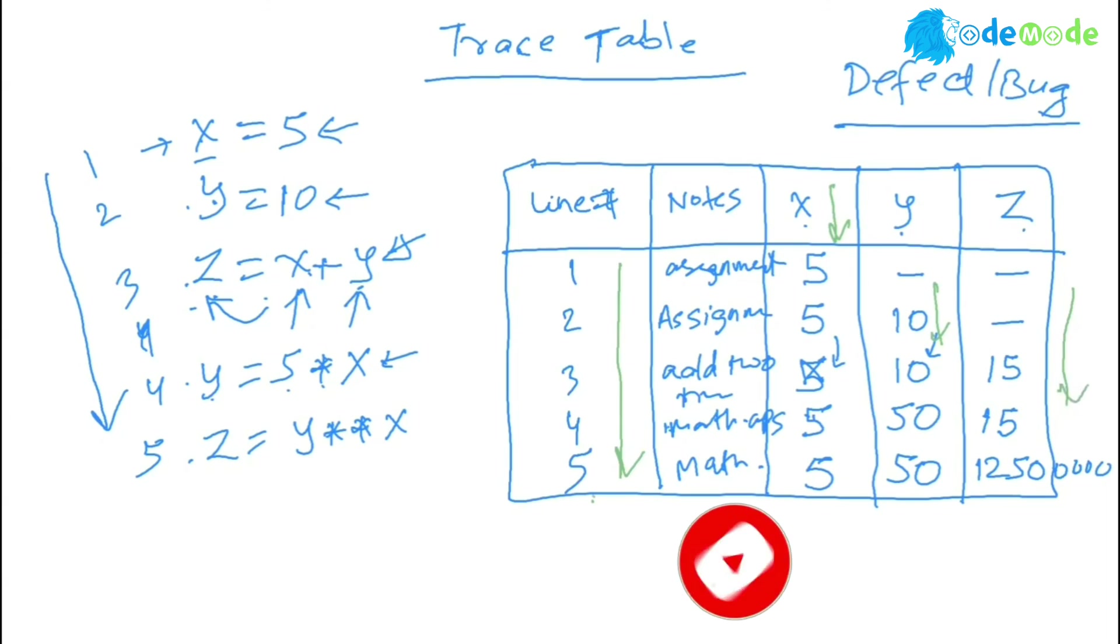By looking at it, I can put different values and trace and find out error. Suppose if we made a mistake here in any line of code, rather than adding, a subtraction, you will find that this value z was calculated as x minus y will become minus 5, and everything will change and become minus. By creating a trace table, you can identify and pinpoint that problem is in this line.